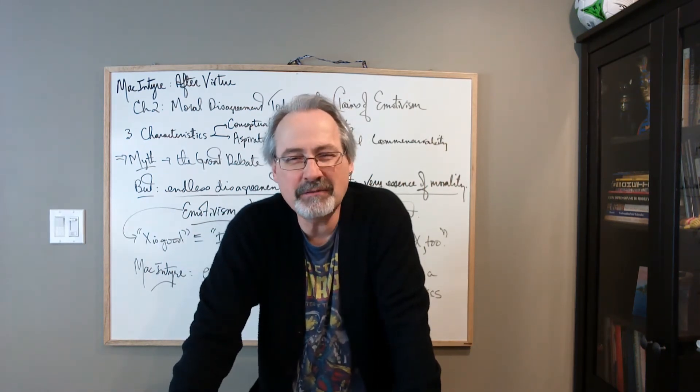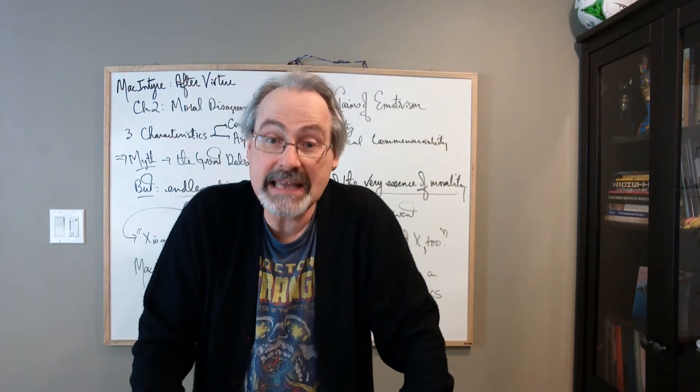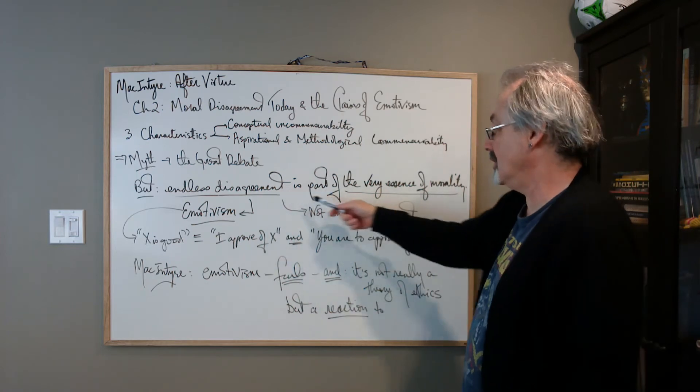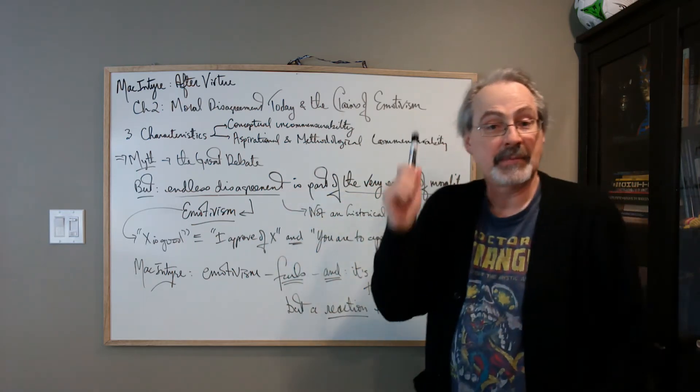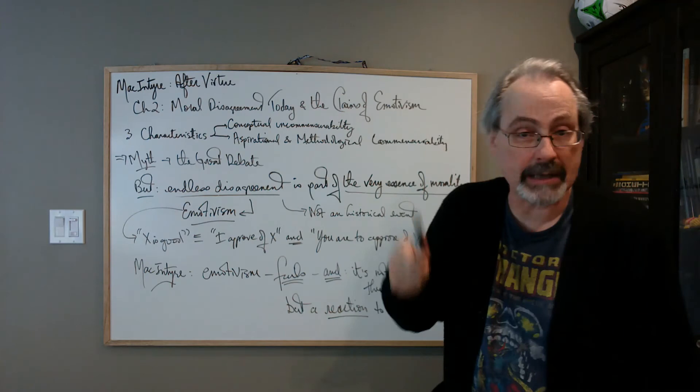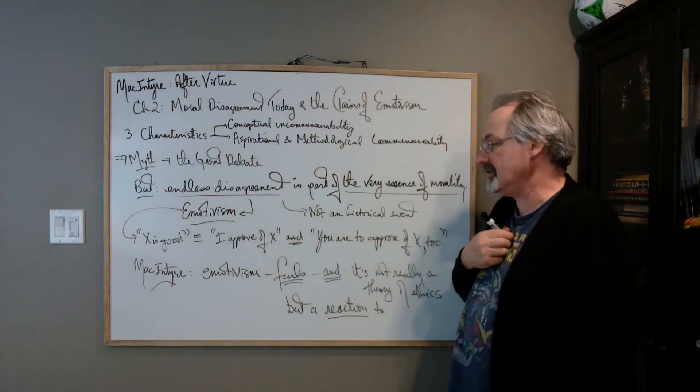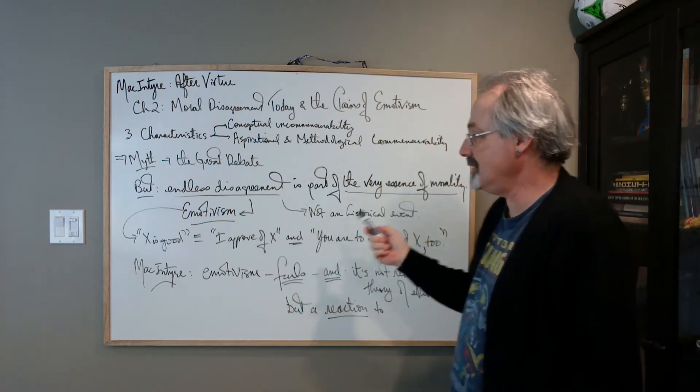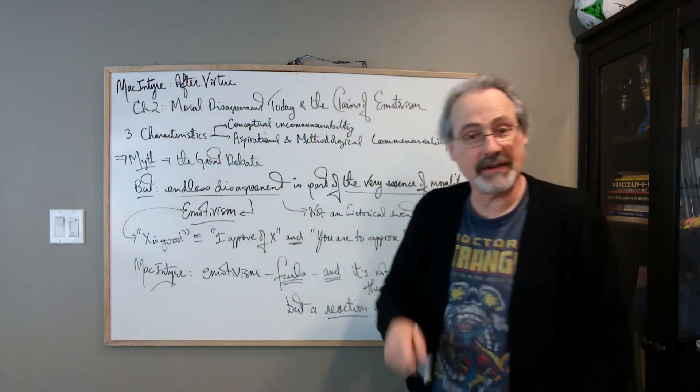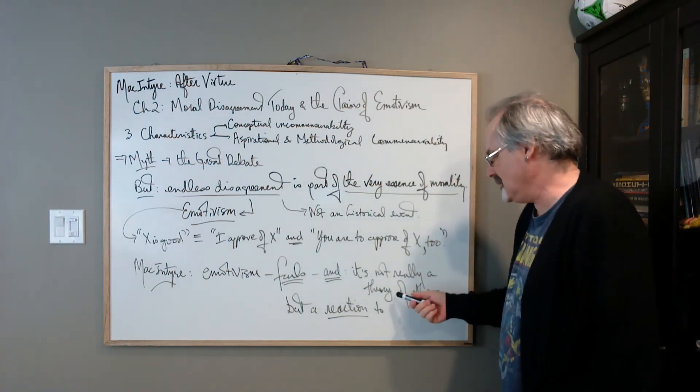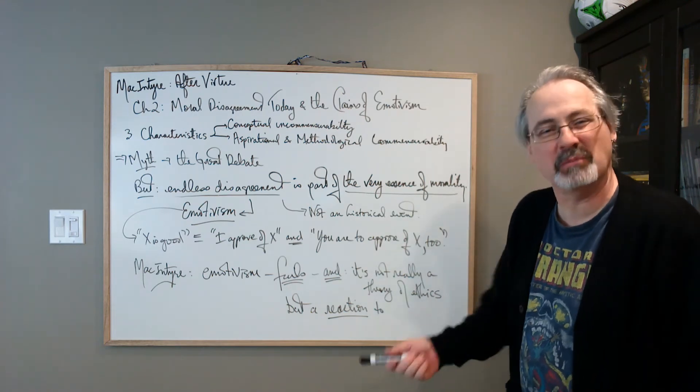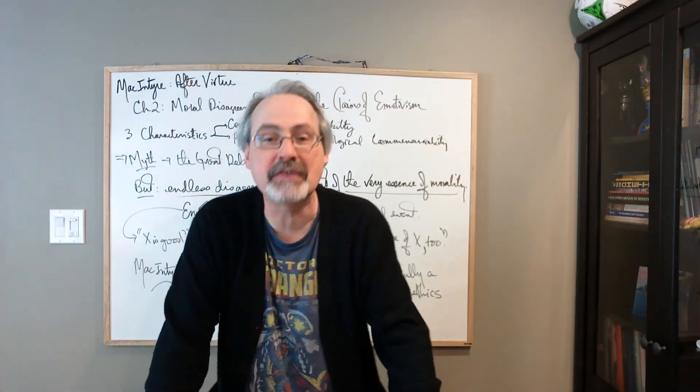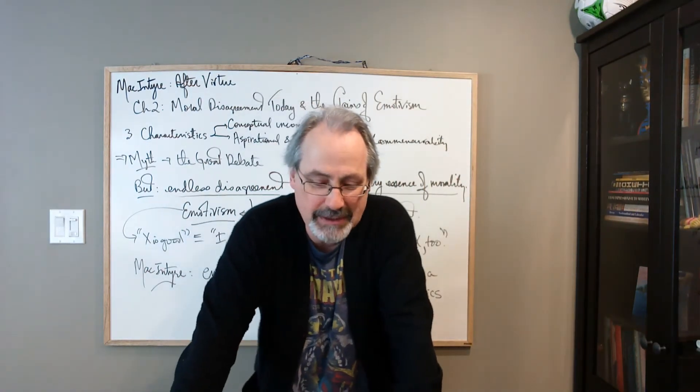Rather, so instead of really characterizing what the essence of ethics is, that emotivism says that endless disagreement is part of the essence of morality, and the disagreements are not, remember, a historical event. MacIntyre says, no, let's go back to the historical thesis and say that emotivism gets this wrong. This is not, and emotivism is not really even a theory of ethics. It's more of a reaction to, a reaction to what? It is a particular event that it really was a response.